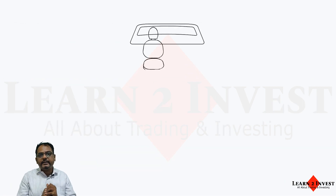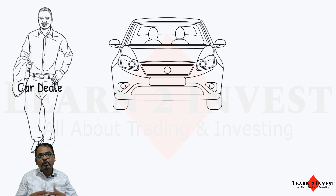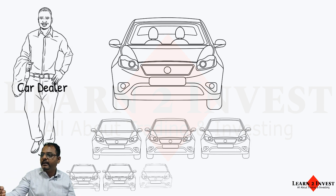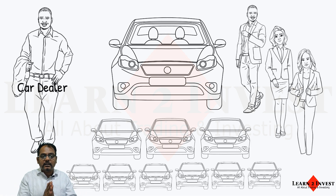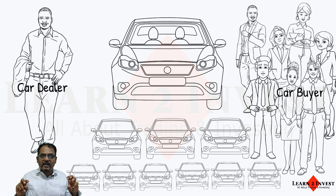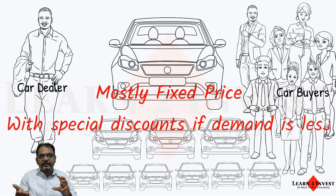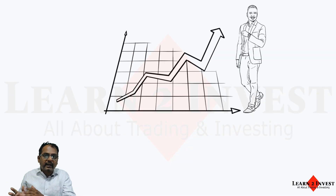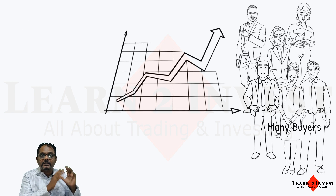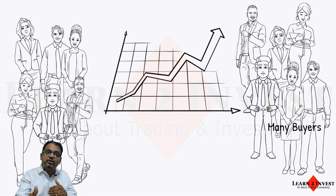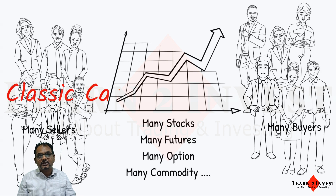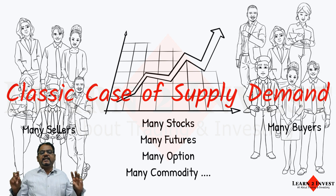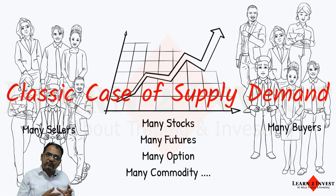Let's talk about the car dealership. A car dealer has many cars to sell and many buyers to buy them. The price is usually fixed by the dealer, but based on supply and demand — mostly demand — he reduces the price by giving discounts. In the stock market, you have many buyers, many sellers, and many things to be sold: lots of stocks, futures, and options. This is the real classic case of supply and demand, where you have lots of things to be sold to lots of buyers by lots of sellers.